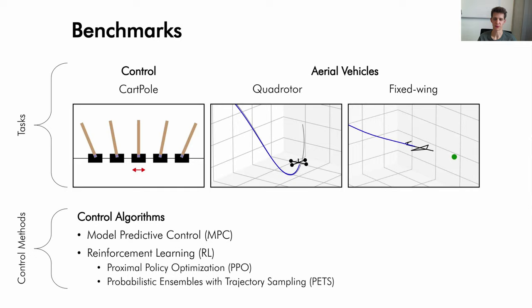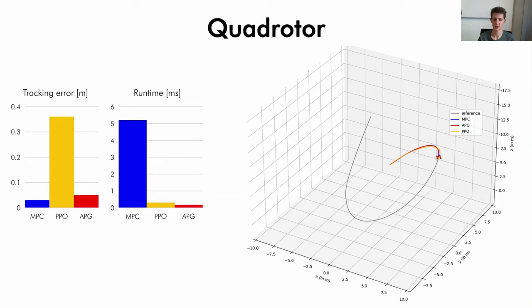We compare the performance of APG to commonly used control techniques, MPC and reinforcement learning, where we compare to both model-free RL and model-based RL methods. On the example of a quadrotor, we see that APG training outperforms PPO, so reinforcement learning, in terms of tracking error while requiring more than 10 times less computation time during deployment.